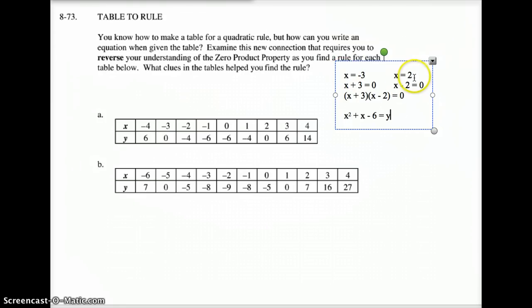So you start with your x-intercepts right here. You reverse the zero property product right here. You then take those two, create them into your factors, that equals 0. You then draw a generic rectangle if you need it. And you create your equation from that. The other thing I want you to do now before you come to class is letter B. Find your two x-intercepts and create your equation.